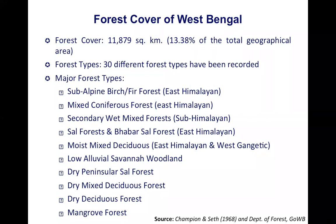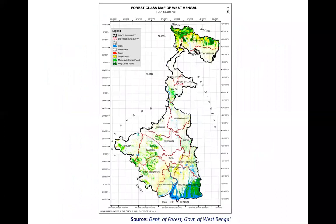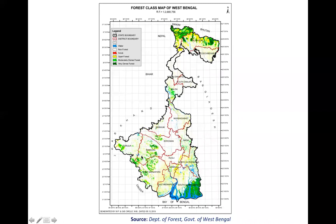From the forest cover map, you can see a definite patch in the northern part and in the southern part. When looking at forested and protected area regions, all the forested areas are either in the northern or southern part. There are also a few patches of forest in the western part, but these are not very dense — they are dry forests.